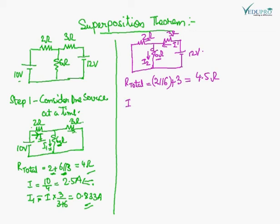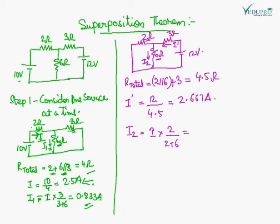I dash is equal to 12 — the voltage supplied — upon the resistance 4.5. The answer is 2.667 Ampere. Now using the current division formula, I2 will be I dash into 2 upon (2 plus 6). Putting in the value of I dash, we get 0.667 Ampere, which is going downward. This current is also going downward.